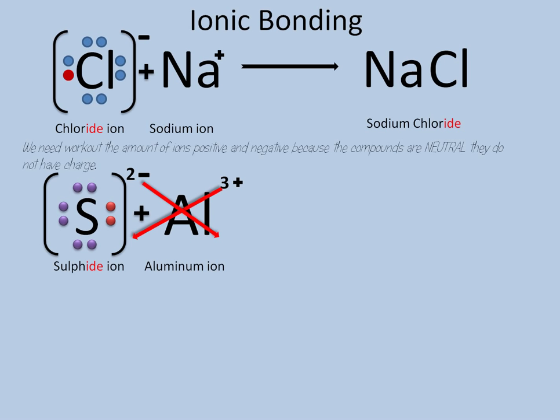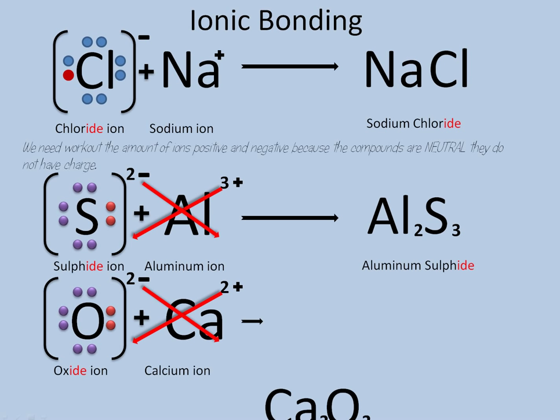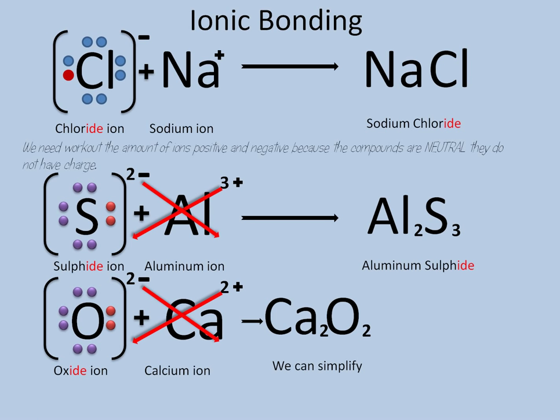The compound is easily formed if we interchange the charges. For aluminum sulfide, we are going to have three sulfide ions and two aluminum ions. Notice that in the formula, the metal is always written first, and the non-metal with the ending "-ide" is written last. For another example, with the oxide ion and the calcium ion, when we interchange the charges or oxidation numbers we get two and two, which we can simplify to obtain calcium oxide.